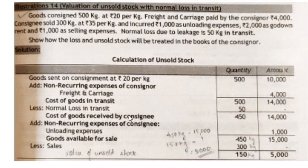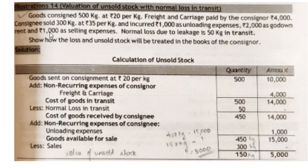Now the consignee has received the goods. We will add non-recurring expenses incurred by the consignee. The only non-recurring expense here is unloading expenses: rupees 1,000. So 14,000 plus 1,000 gives total cost of goods as 15,000 and quantity 450. After adding non-recurring expenses, this is goods available for sale — 450 kg at rupees 15,000.